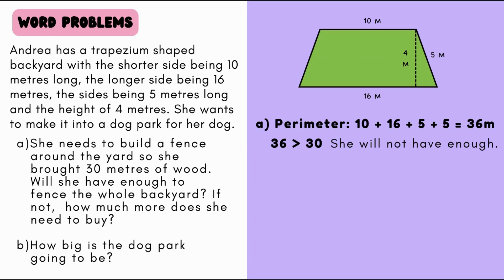36 meters is greater than 30 meters, so she will not have enough. 36 minus 30 equals 6 meters, therefore she needs 6 more meters of wood in order to fence around the whole backyard.